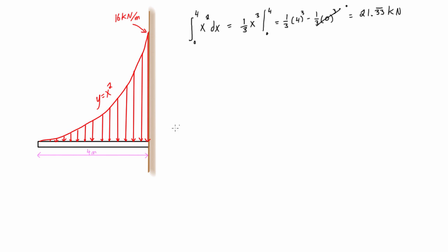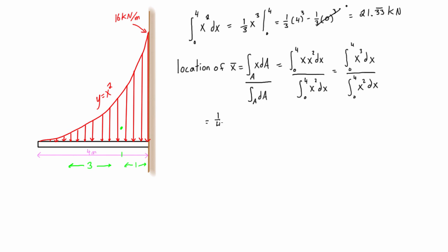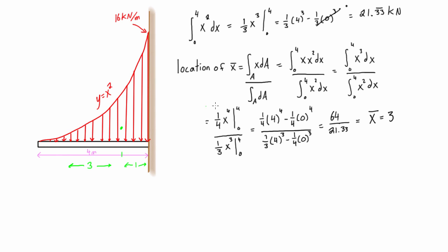Now we need to locate the centroid. The centroid of a parabola sits three-quarters of the way away from the small side and one-quarter away from the tall side, so x-bar sits at 3 meters from the left side and 1 meter from the right side. If you forget that on a test, you can always derive it using the centroid equation — just swap y-bar for horizontally applied loads.